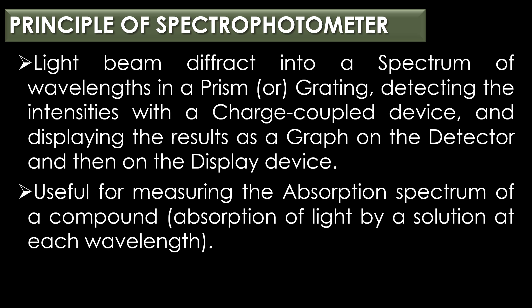The spectrophotometer technique measures light intensity as a function of wavelength. It does this by diffracting the light beam into a spectrum of wavelengths using a prism or grating, and detecting the intensities with a charge-coupled device, displaying the results as a graph on the detector and then on the display device. The spectrophotometer is useful for measuring the absorption spectrum of a compound — that is, the absorption of light by a solution at each wavelength.